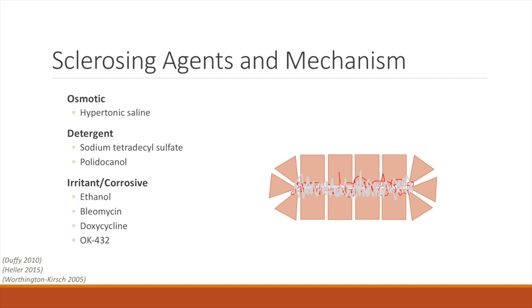Irritant or corrosive agents act by a variety of mechanisms to cause cell disruption and inflammation. Several examples frequently seen in the literature are ethanol, bleomycin, doxycycline, and OK-432. Ethanol is likely the most commonly used irritant sclerosing agent due to its availability, cost, and good results, as it has a 75 to 100 percent response rate.